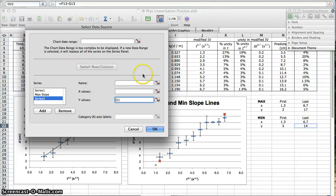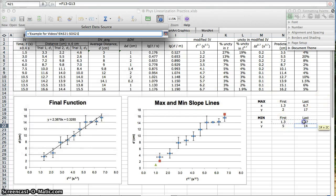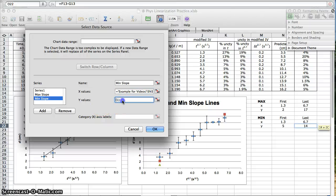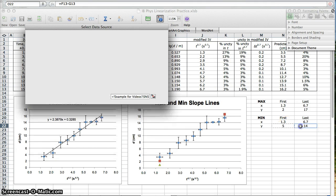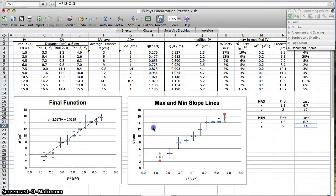Add another series, another x, y series. Call it min slope. And then, for the x values, choose from your chart. That's why the chart is so useful. For the y values, choose the y values for your min line. Hit OK.